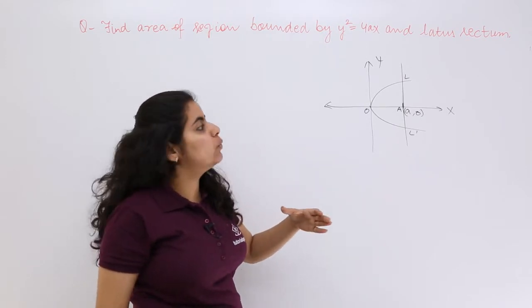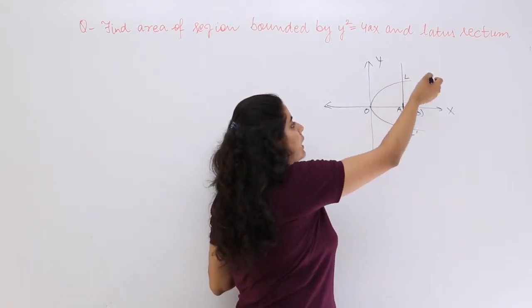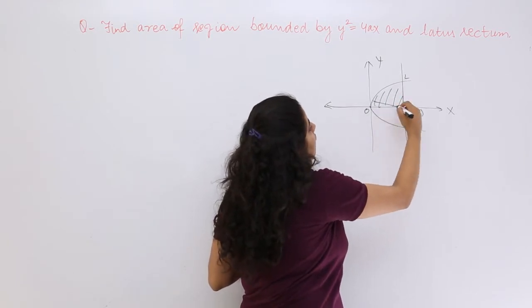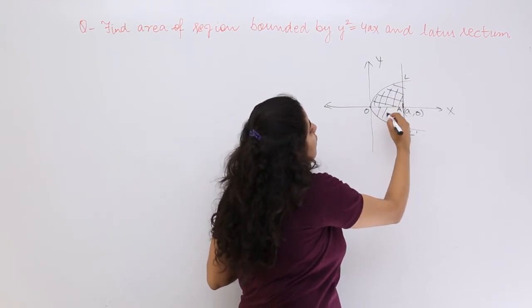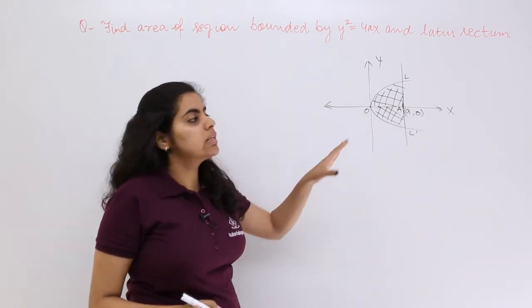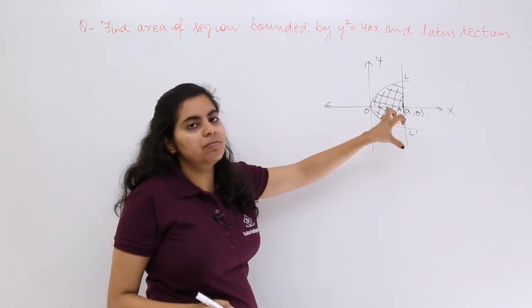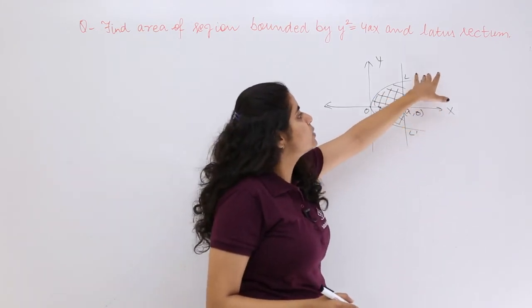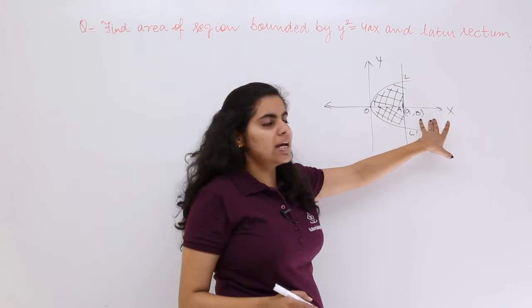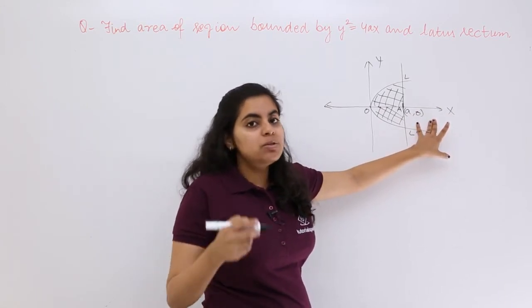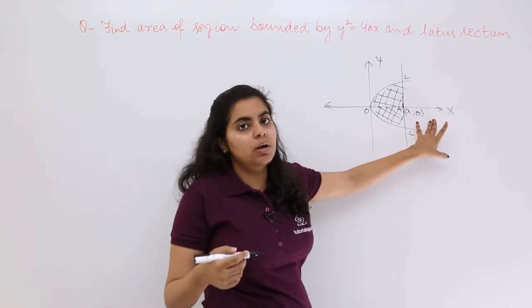Now what area do you need to find out? You need to find the area bounded by the parabola and the latus rectum, this shaded area above and below. Since this curve is symmetric about the x-axis, whatever area is above, that only area is below. So you can find out only one area and then multiply by 2.